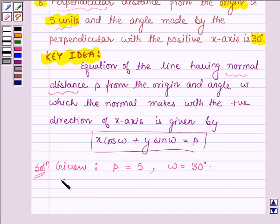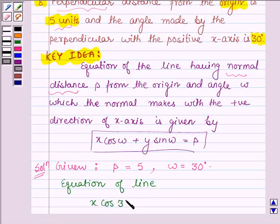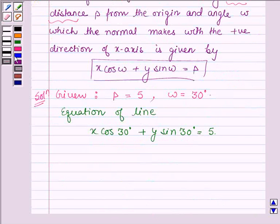So by our key idea, the equation of the line is given by x cos 30 degrees plus y sin 30 degrees equals P, that is 5. Or we have x cos 30 degrees is root 3 upon 2 plus y sin 30 degrees is half equals 5.